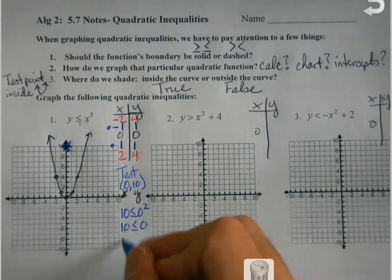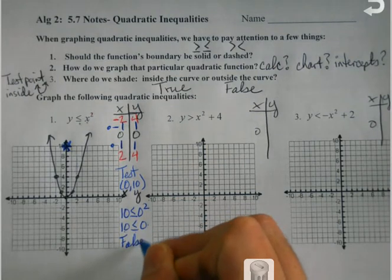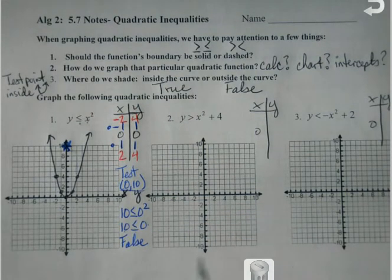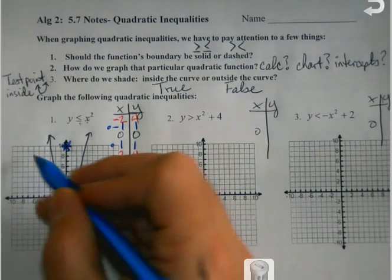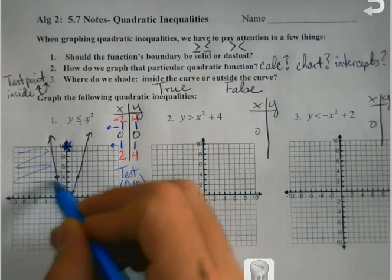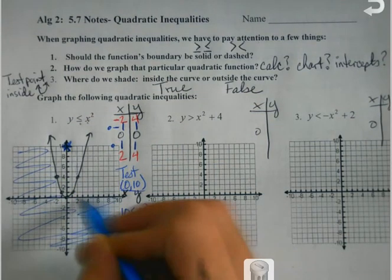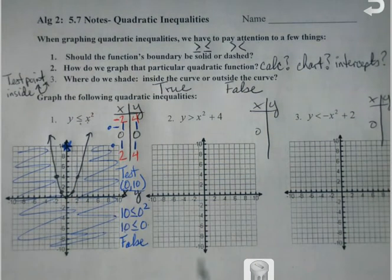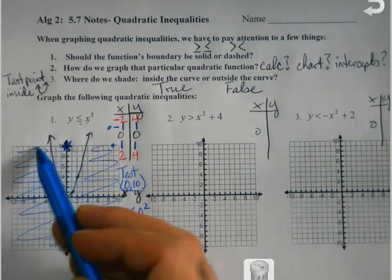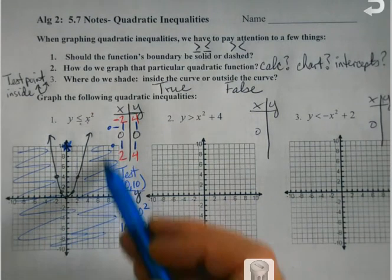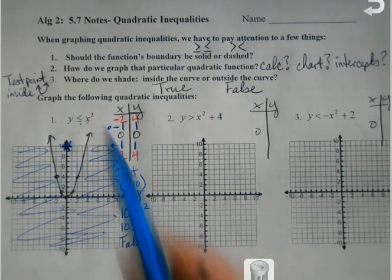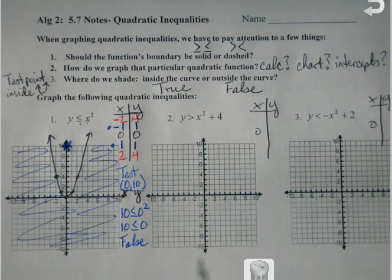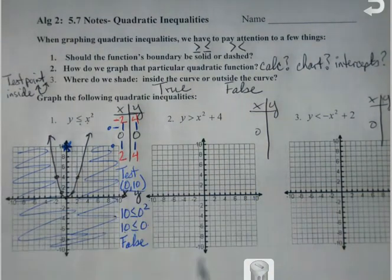No — that is false. And since it's false, I shade the area outside my curve, outside my parabola. That's where the solution set would be — all of the answers that I could plug in that would work are all out there.